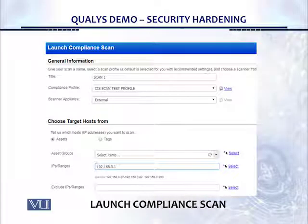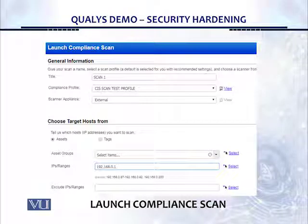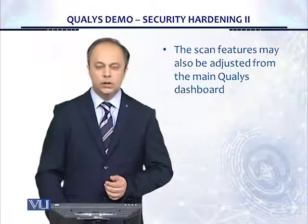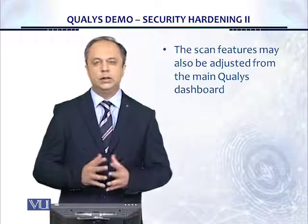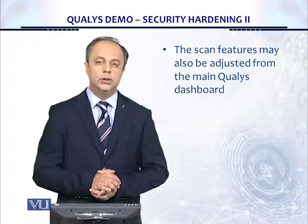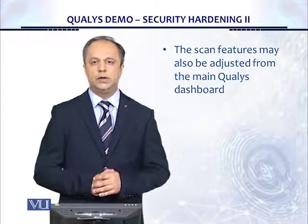Now we reach the 'Launch compliance scan' window and have come back to the compliance profile. It's asking us once again that the compliance profile entered was the CIS scan test profile, and it's also showing us the IP addresses we want to scan that we had entered. As you can see, the scanning mechanism is fairly straightforward — there are five buttons and five sequence steps.